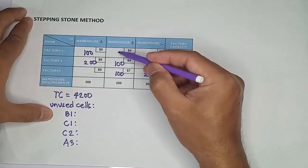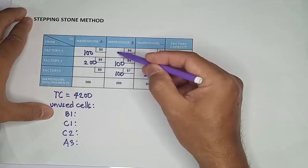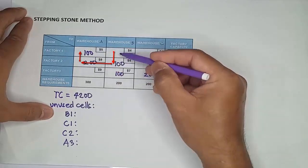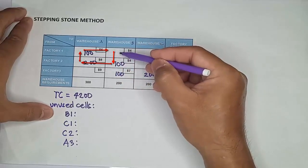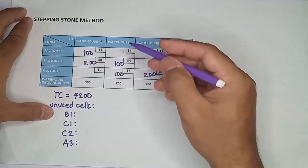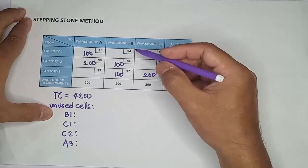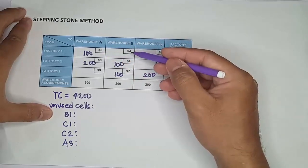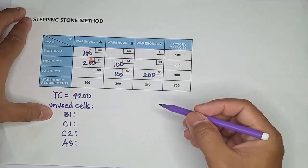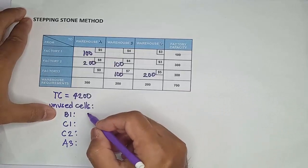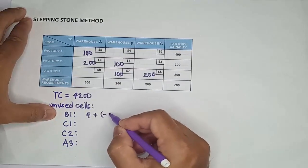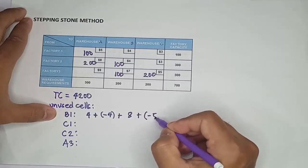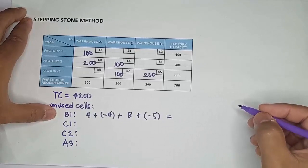For instance, for unused cell B1, its loop is from B1 to B2, to A2, to A1, going back to the empty cell. Once the loop has been identified, we take the sum of the transportation costs by assigning an alternating plus/minus to each cost. For B1: 4 minus 4 plus 8 minus 5, which is equal to 3.